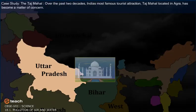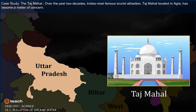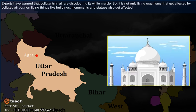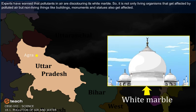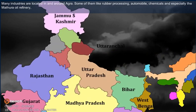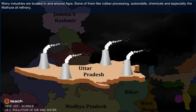Case Study: The Taj Mahal. Over the past two decades, India's most famous tourist attraction, the Taj Mahal located in Agra, has become a matter of concern. Experts have warned that pollutants in air are discoloring its white marble. So, it is not only living organisms that get affected by polluted air, but non-living things like buildings, monuments and statues also get affected.